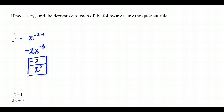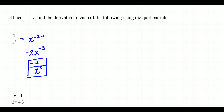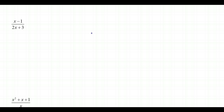If you have 1 over x² — or any number over x to a power — rewrite it by moving the variable to the numerator with a negative exponent. This avoids the quotient rule entirely.